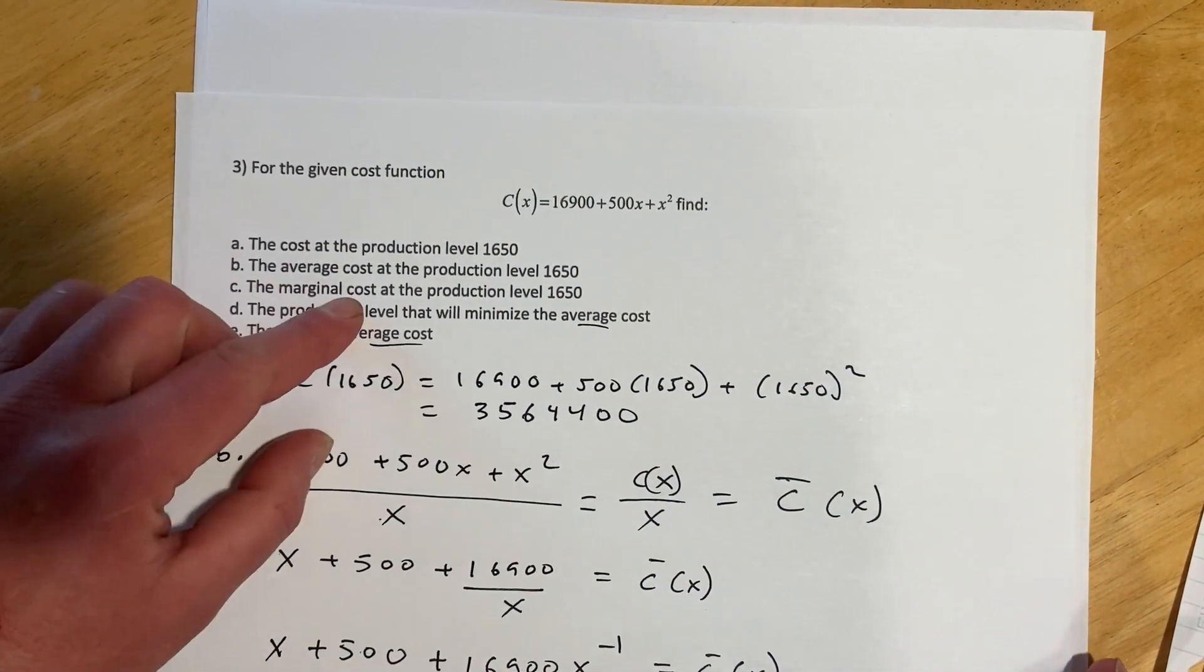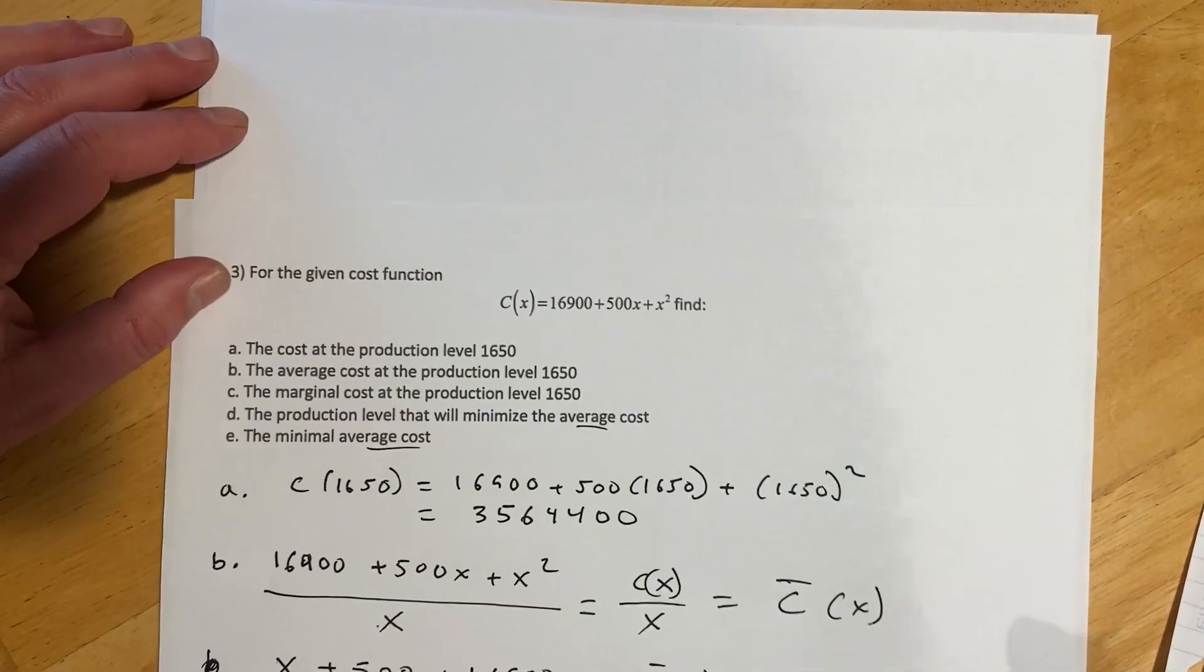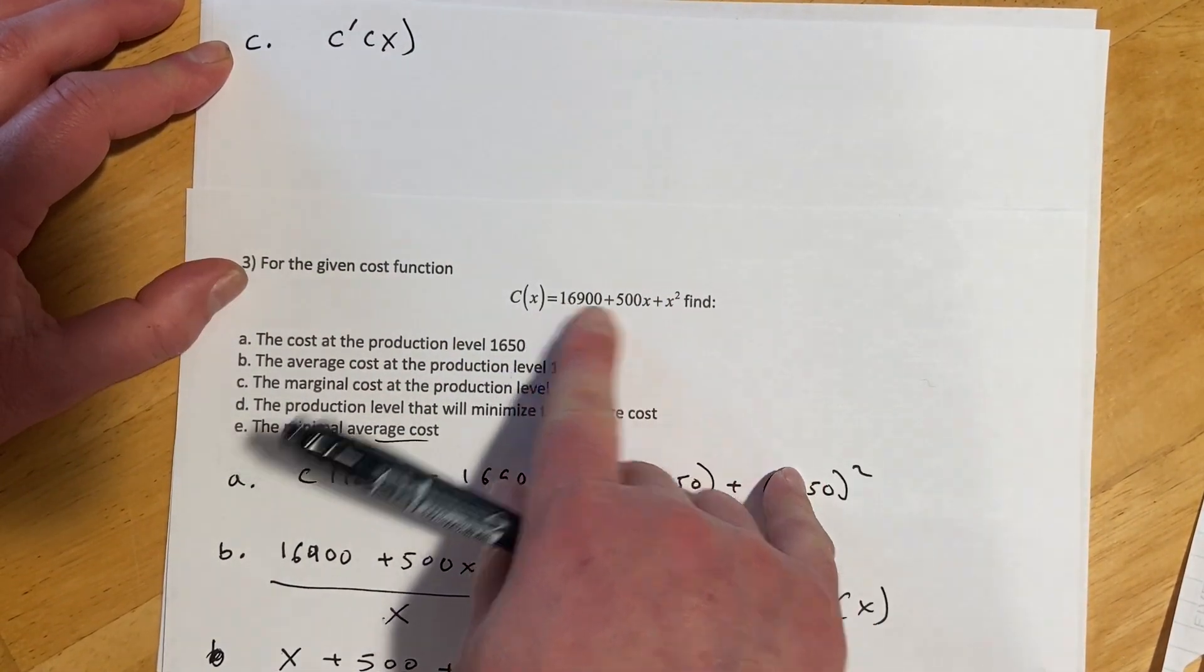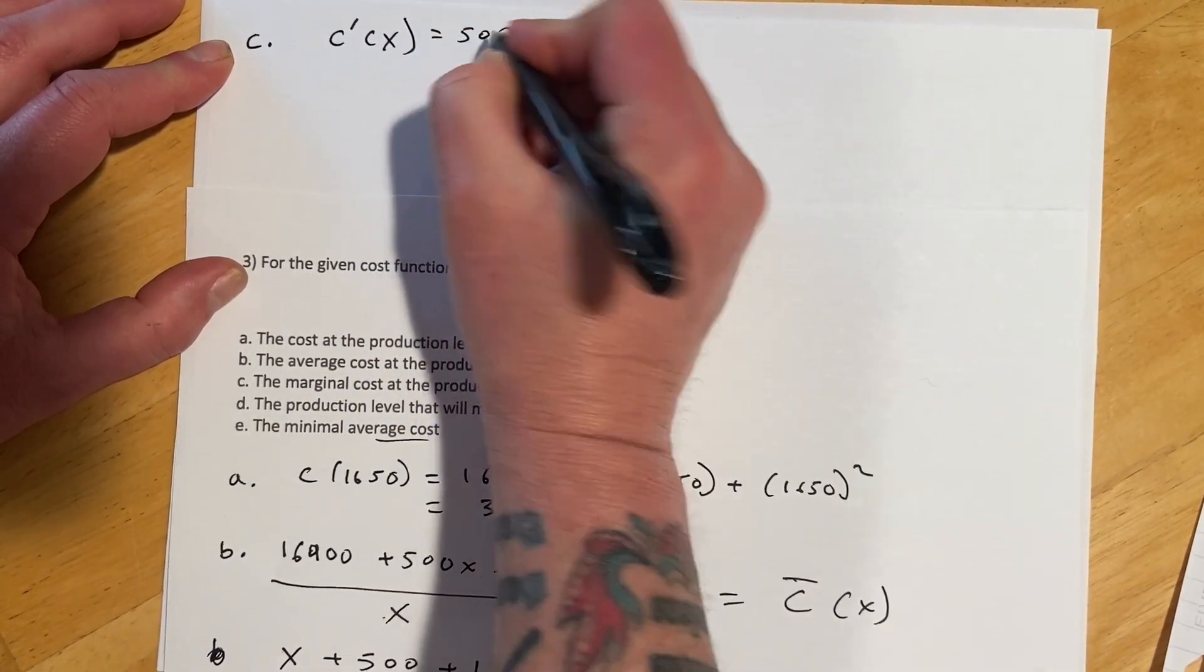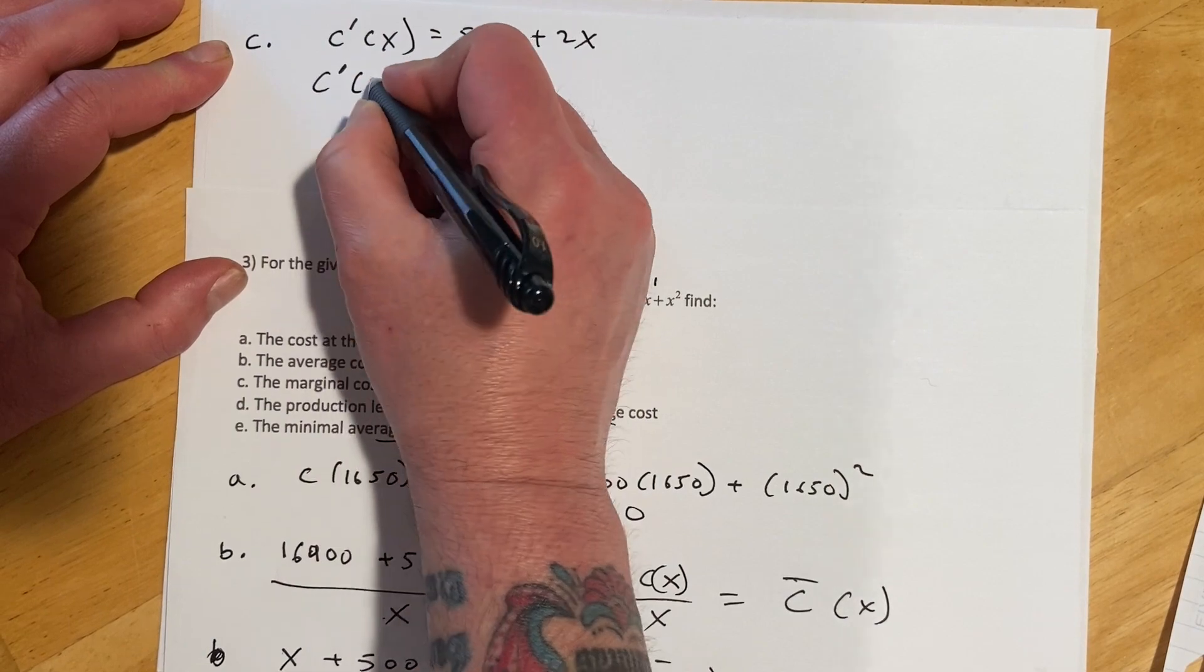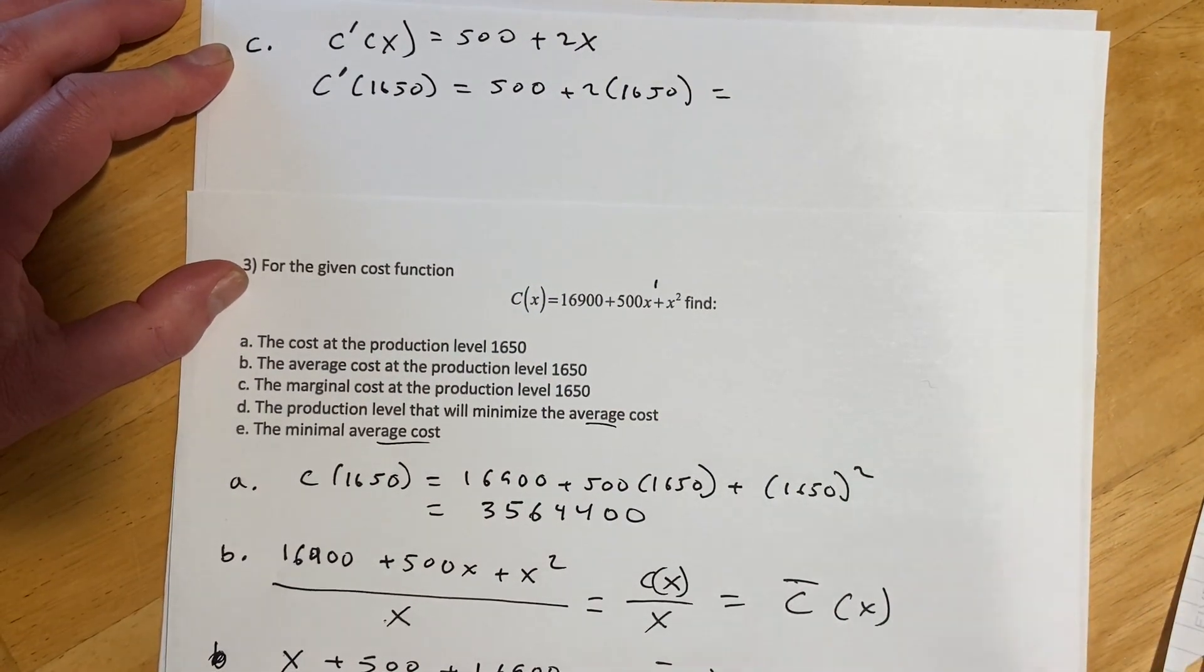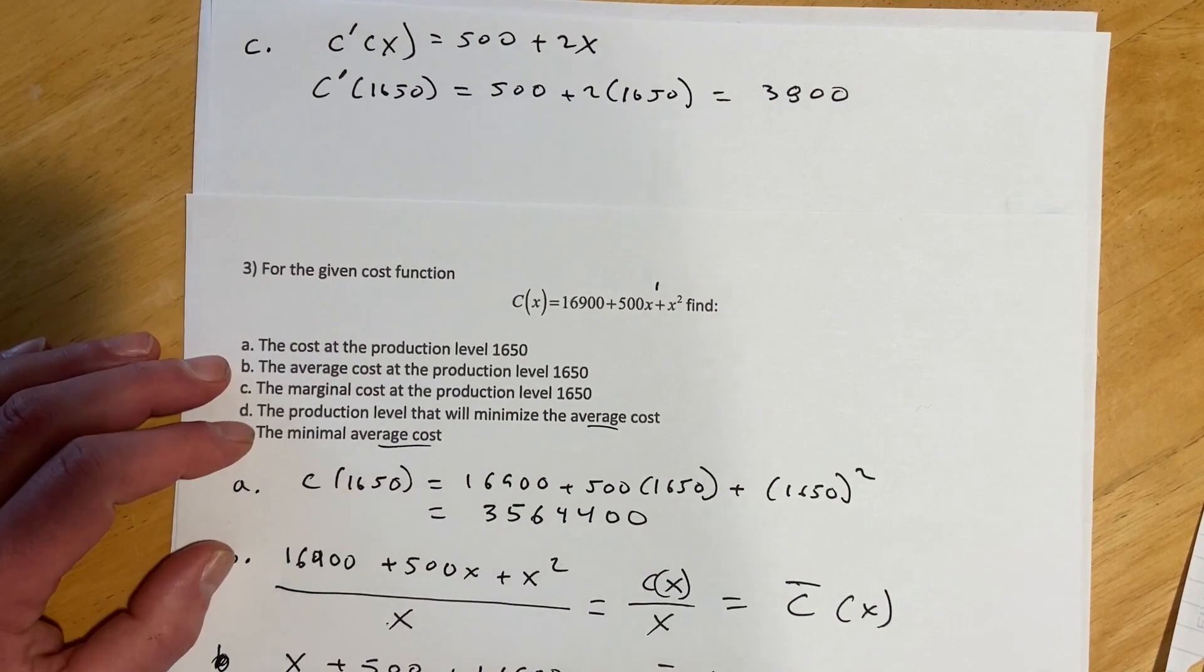For part C, it's asking us to find the marginal cost at the production level of $16.50. So if I want to find the marginal cost, that means I'm going to have to find the derivative of this cost function. And so C is going to be C prime of X. That will drop off. I mean, again, I think this would be a 1, 1 times 500. And then the X drops, and then 2X. And then we would just find C prime of $16.50 again, and plug that in here. And when you do that, you will get $3,800.